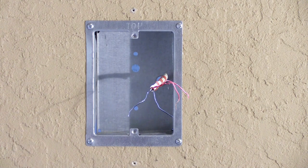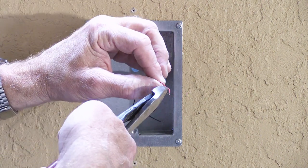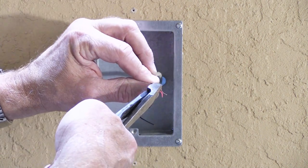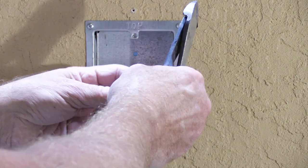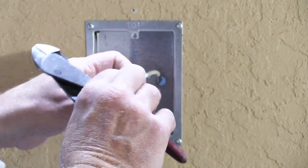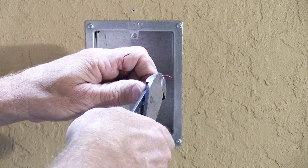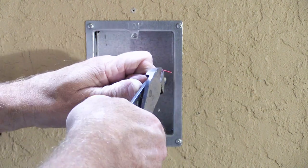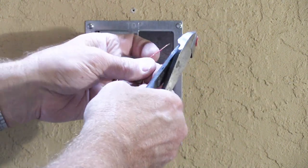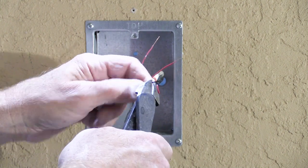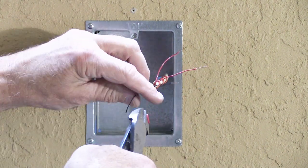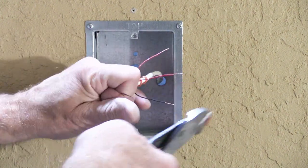Once you've done that, we need to strip off some of the insulation off the ends of the wires so we have nice fresh clean copper. And you don't need to strip off a whole lot. Roughly a half an inch is plenty. Like that.